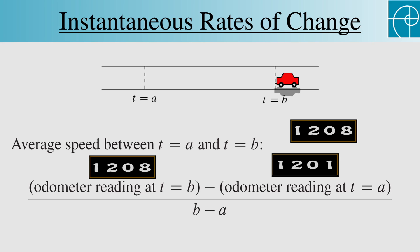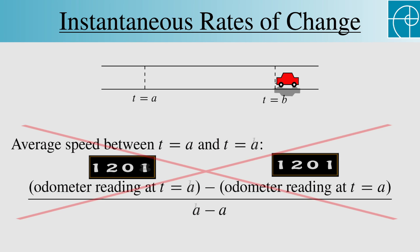But what if you don't want an average? What if instead you want to know your speed at the moment when t equals a? In other words, your instantaneous rate of change at a? We can't just plug a into both places in this ratio, since you get 0 over 0, so we'll need to do something else. What we do will be determined by what we want the instantaneous rate of change to be, so let's think about that for a moment.